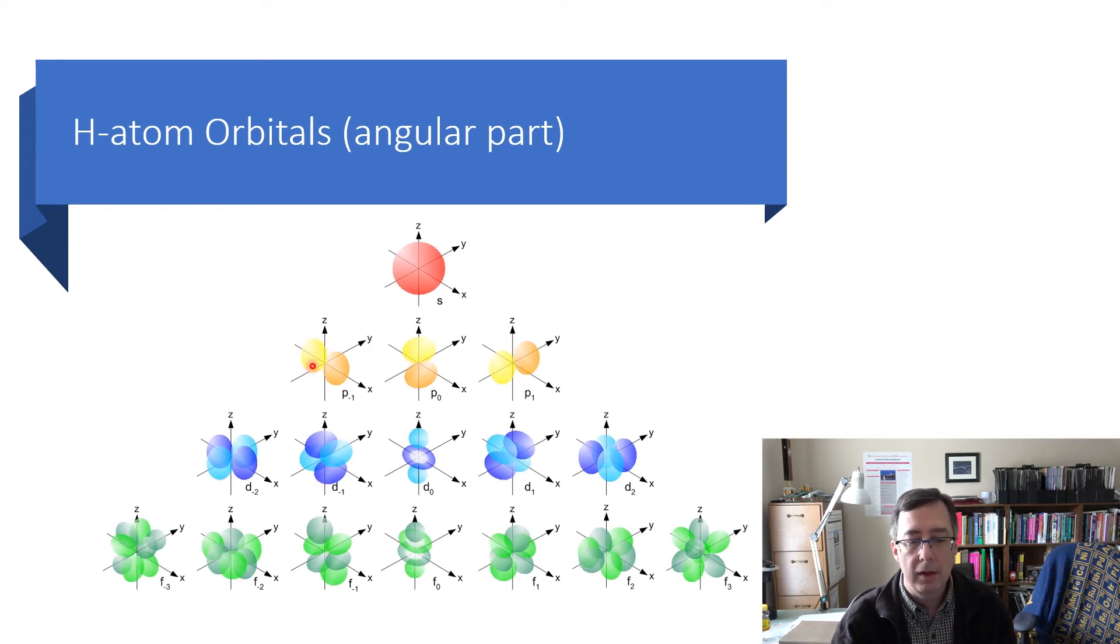And so the lighter lobe might be positive and the darker lobe might be negative. The orbitals have a sign to them now. And we'll talk more about the sign in a minute.